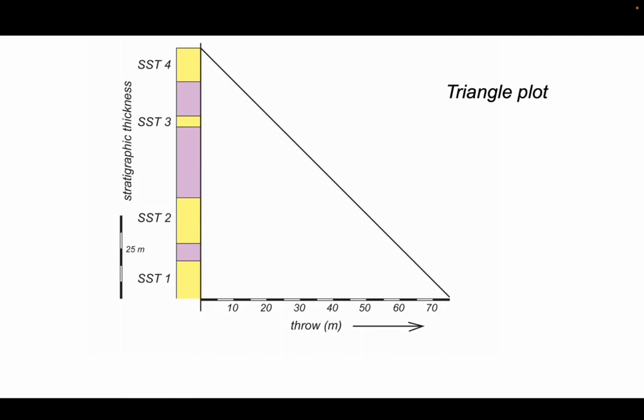So it is useful to show how stratigraphic juxtaposition can be controlled by throw. And this is easily done with a so-called triangle plot. On this, we plot stratigraphic thickness of the various units up the vertical axis. And on the horizontal axis, we will plot fault throw at the same scale as used for the stratigraphic thicknesses. We're going to cross-plot the stratigraphy against possible throws at this same scale.